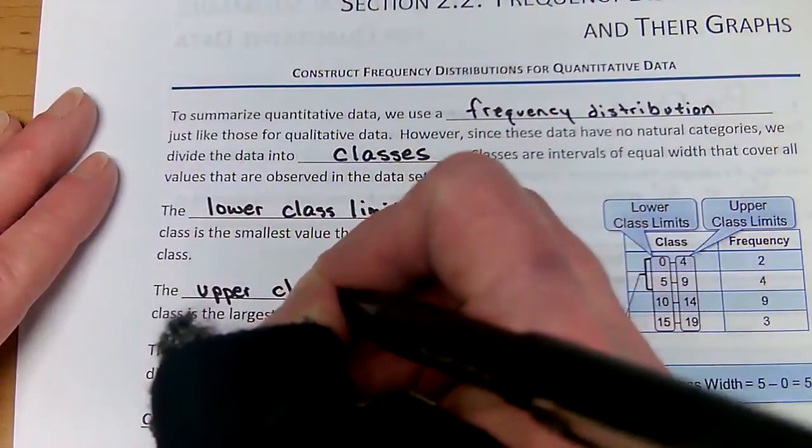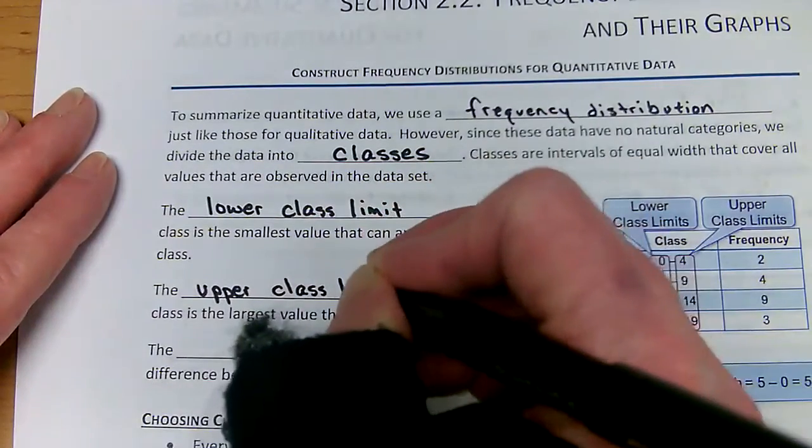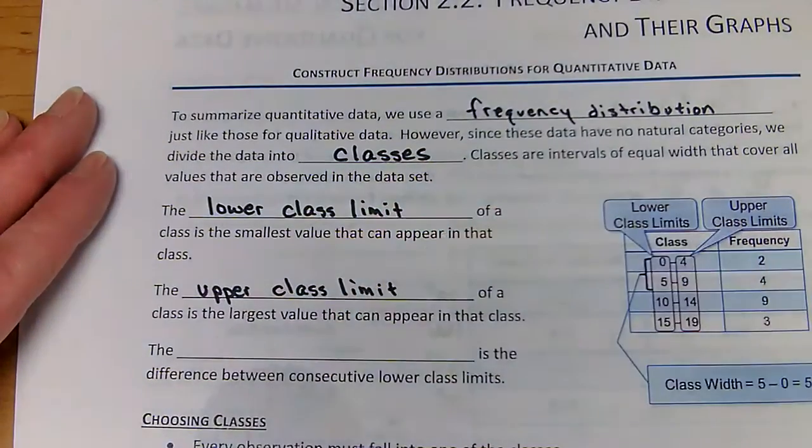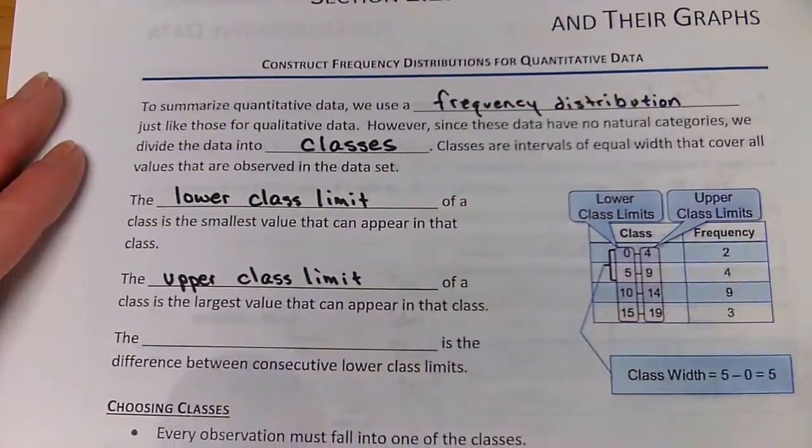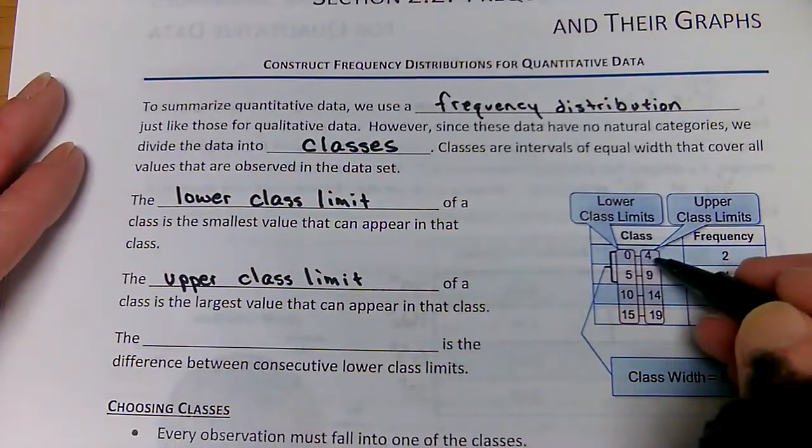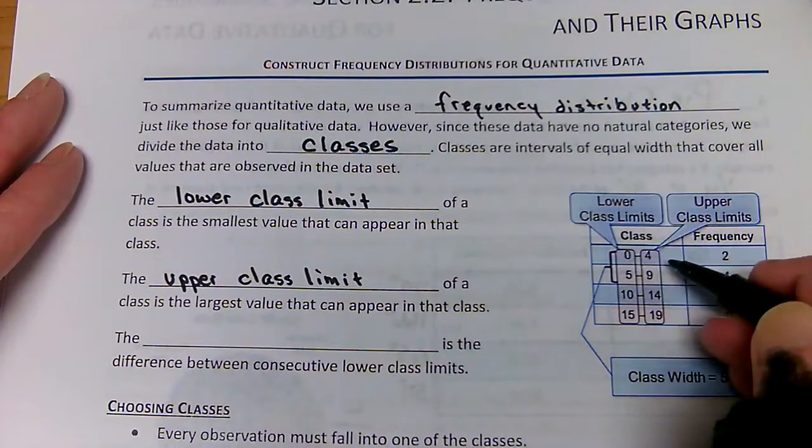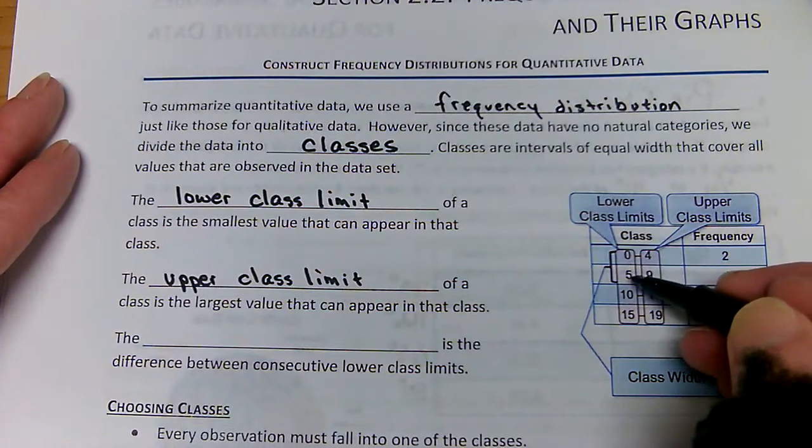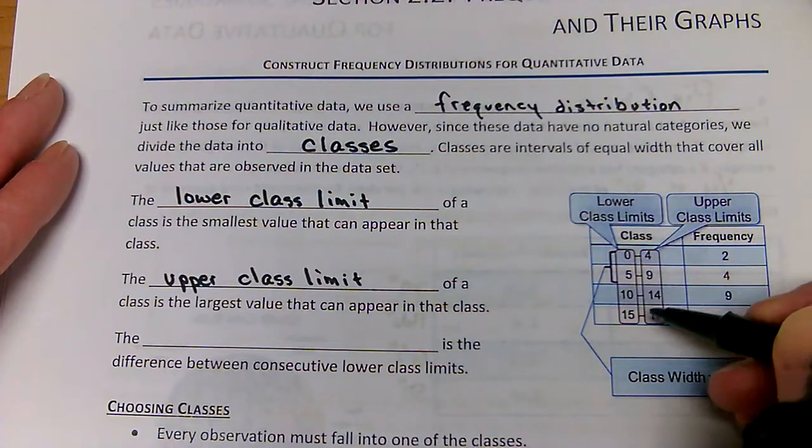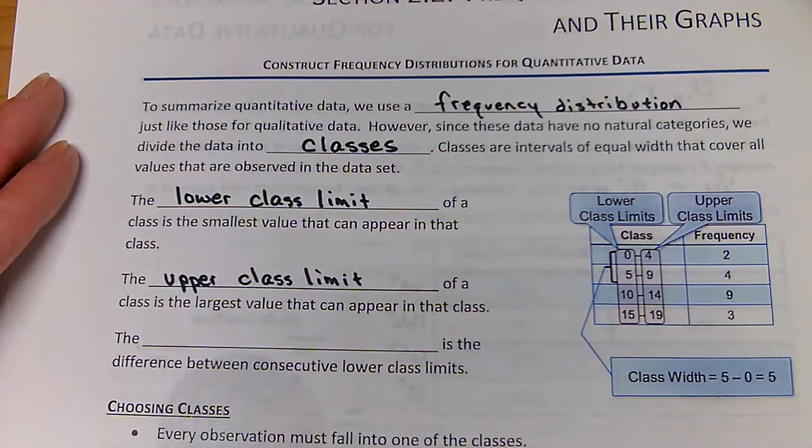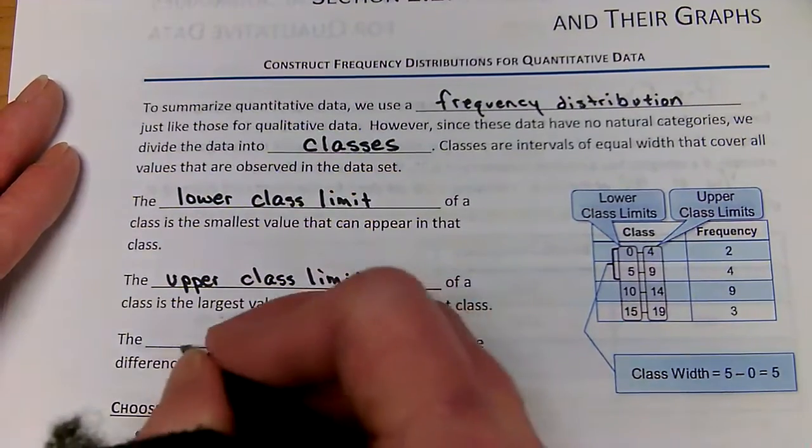The upper class limit of a class is the largest value that can appear in a class. So here we have a class from zero to four, so the lower limit would be zero, upper limit four. Then the next group starts at five and goes to nine, 10 to 14, 15 to 19.